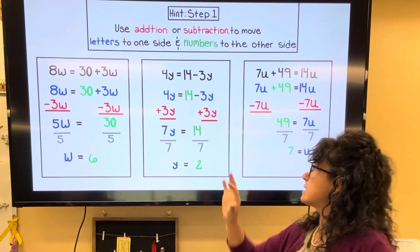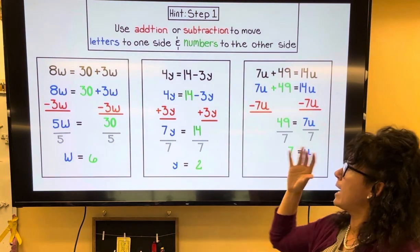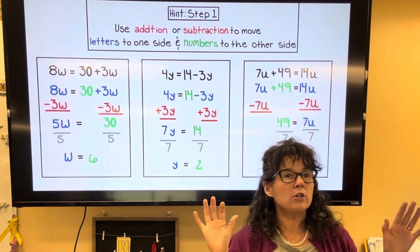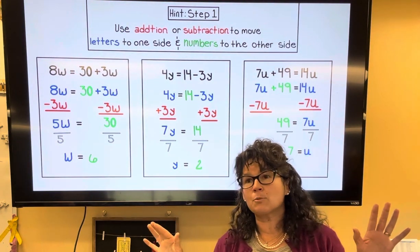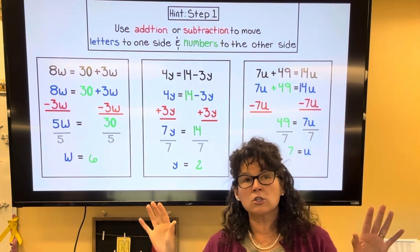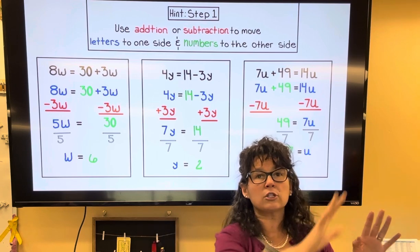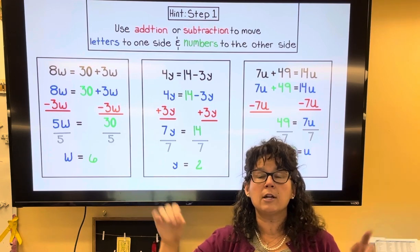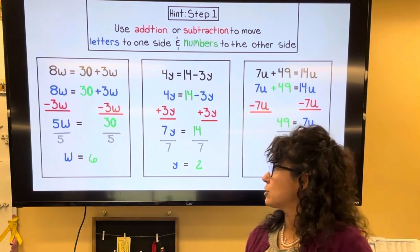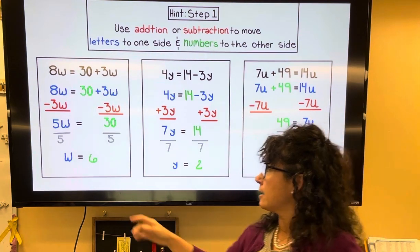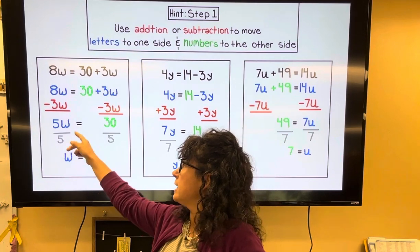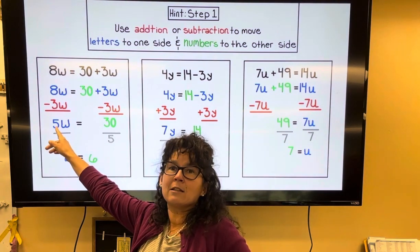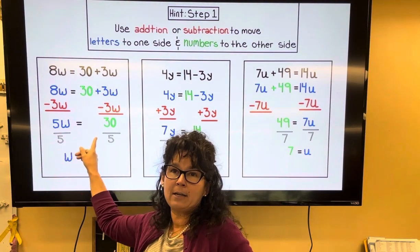To summarize: you want to use addition and subtraction to move letters to one side and numbers to the other. After you've done that, get rid of the number next to the letter by dividing by it.